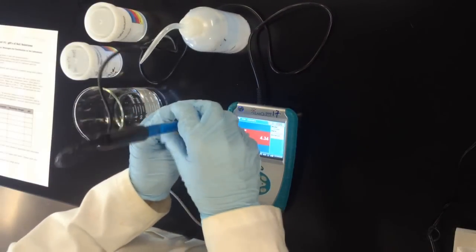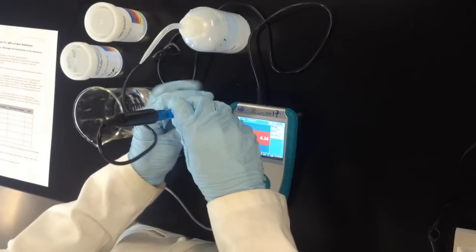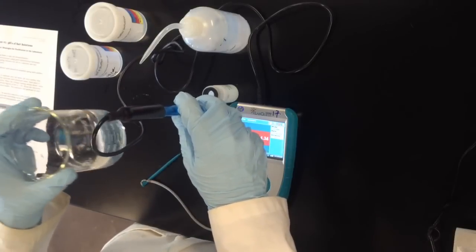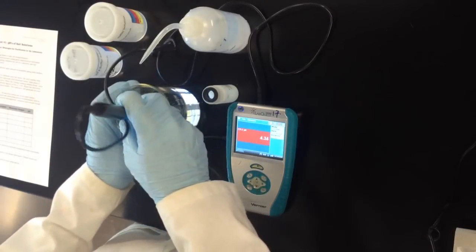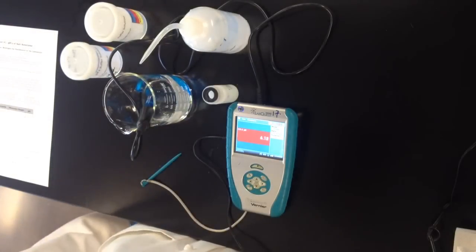So the first step is to unscrew the storage capsule here and take out the pH probe. I like to keep a beaker of distilled water around. It's good to catch washings that we'll use later and I often will just store the pH probe in this distilled or deionized water.